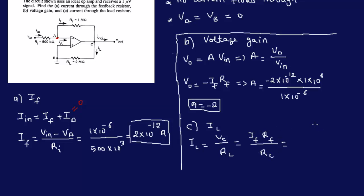And Vout is IFRF. So we have IFRF over RL. And so this is IF is, what's IF? 2 times 10 to the power minus 12. RF is 1. And RL is 2 times 10 to the power 6. So the 6 and the 6 will go up and they would cancel out. So that's gone to 2. So we have 1 times 10 to the power minus 12, right?